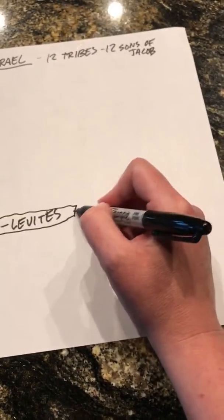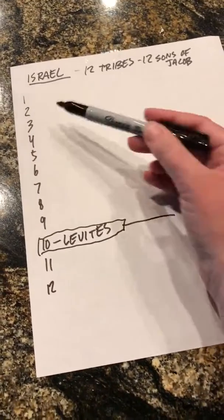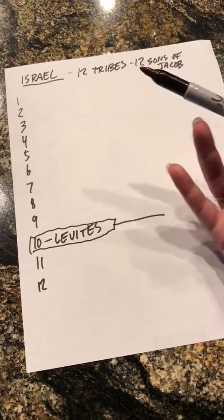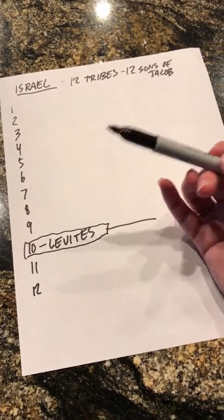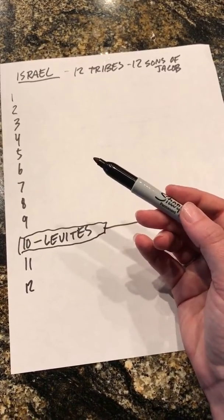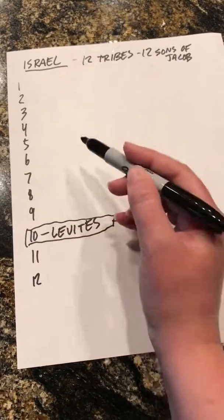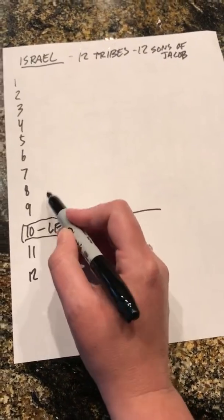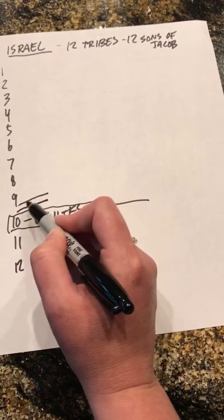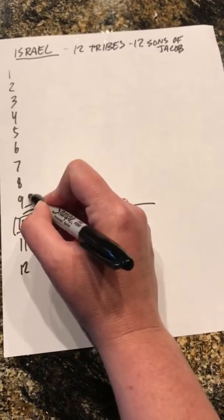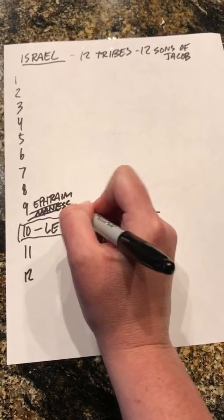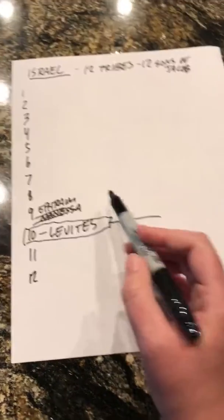What happened was Joseph was one of the sons of Jacob. He was exiled from his brothers, had to be a slave, had dreams — you know the whole story. Joseph was like an honored son and God honored him, saying he'd get a double portion of land. When he died, he gave it to his two sons, Ephraim and Manasseh. So those two fill in the spot, giving you 12 pieces of land.